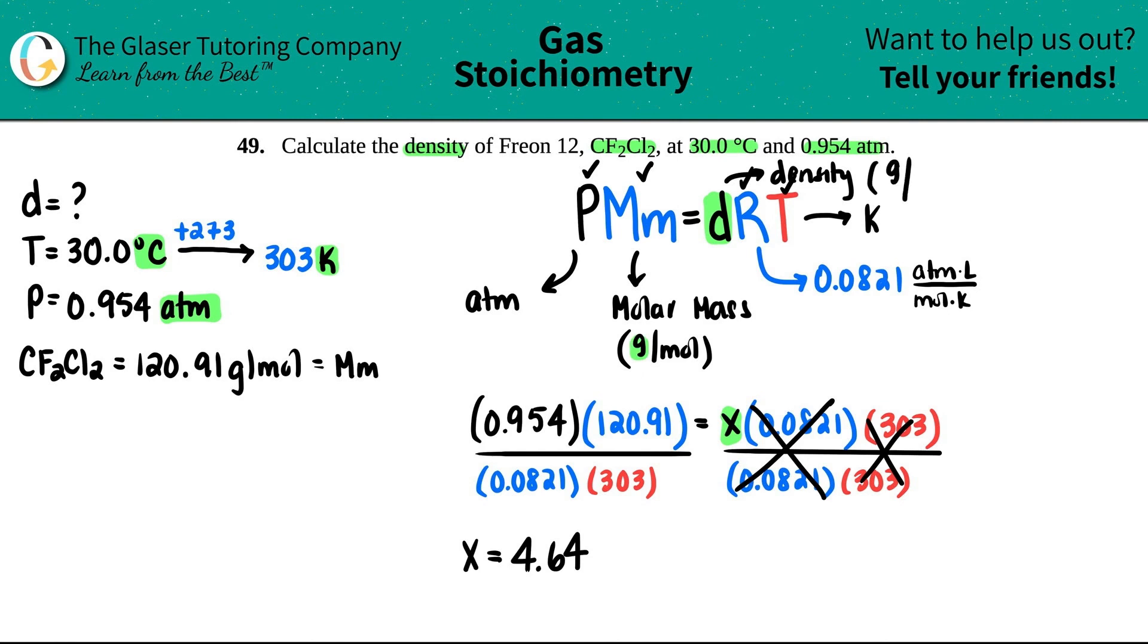The mass in this formula was in the molar mass, it's grams. So this would always be G. And then if you search for the volume in this formula, you'll find it in the R value, right? The R value still has a liter. So this would be grams per liter, not grams per mil. And that's your density. So it's 4.64 grams per liter.